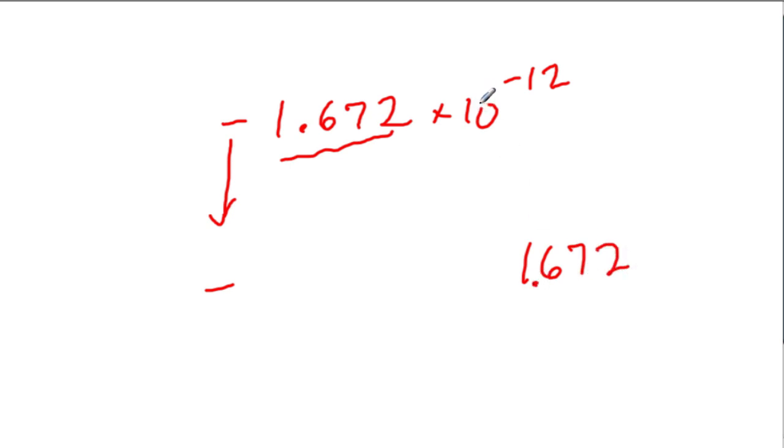And we're dividing by 10 twelve times. So that means every time we divide by 10, we move 1 to the left. So you can ask yourself, how many zeros am I going to have over here? You can count them out by hopping 12 times.